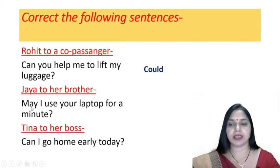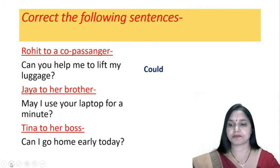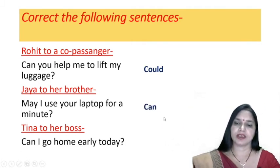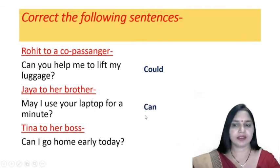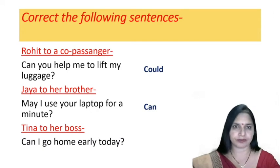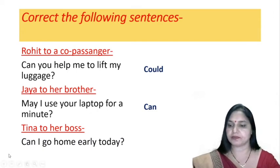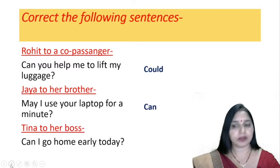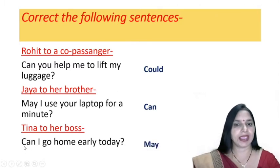Jaya to her brother: 'May I use your laptop for a minute?' — Instead of 'may,' Jaya should use 'can,' because she is talking to her brother with whom she has a casual, informal relationship. Tina to her boss — they have a formal relationship. So she should use 'may,' not 'can.' The correct sentence is: 'May I go home early today?' I hope you have understood it now.